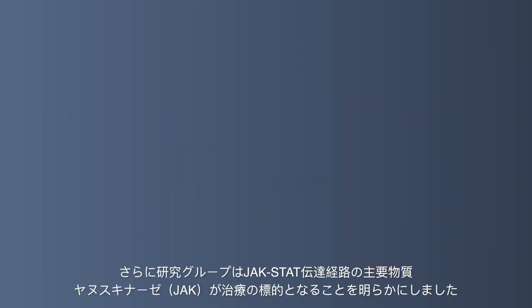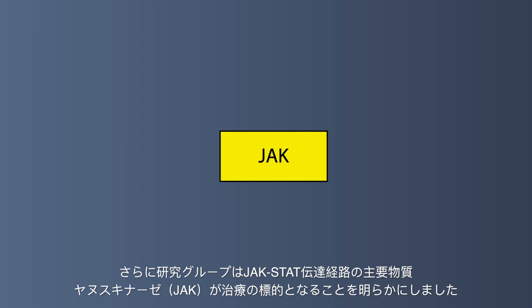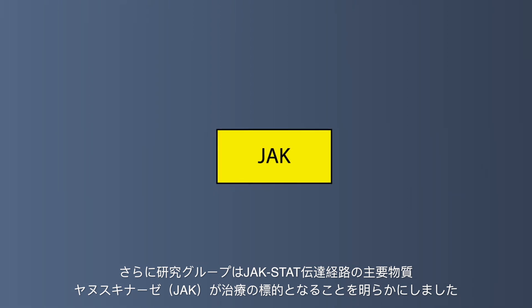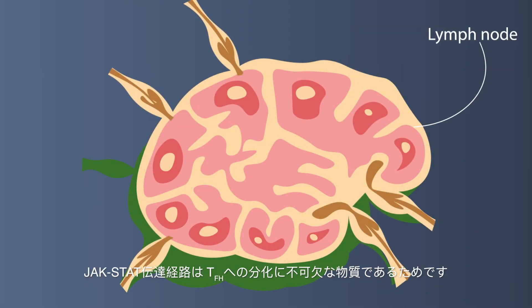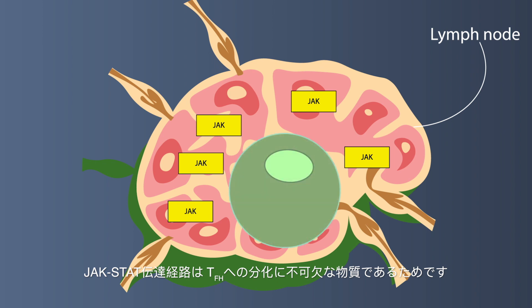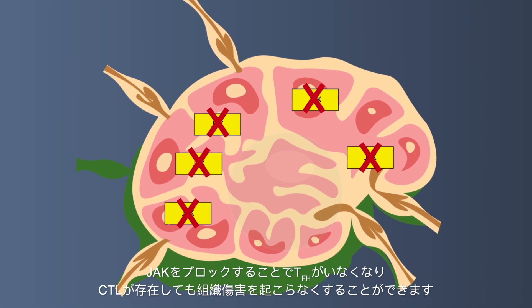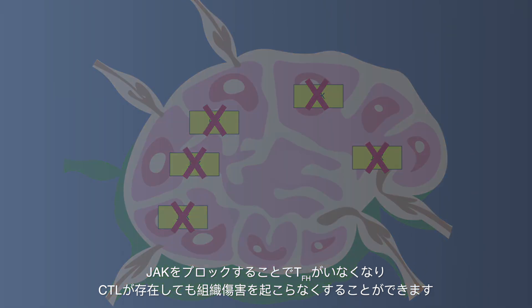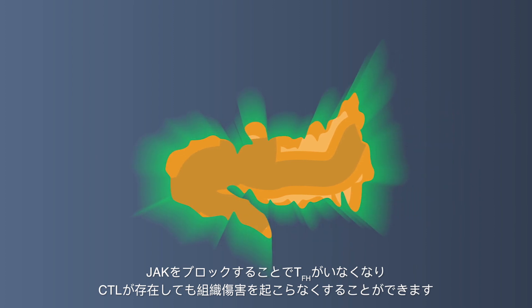Further, the scientists proposed that Janus kinase, or JAK, a key component of the JAK-STAT cellular signaling pathway, can be a suitable therapeutic target, as this pathway is an integral step in the generation of TFH cells. If this JAK pathway is blocked, there is little to no TFH generation, meaning that the CTL responses will not be harmful for the pancreas tissue.